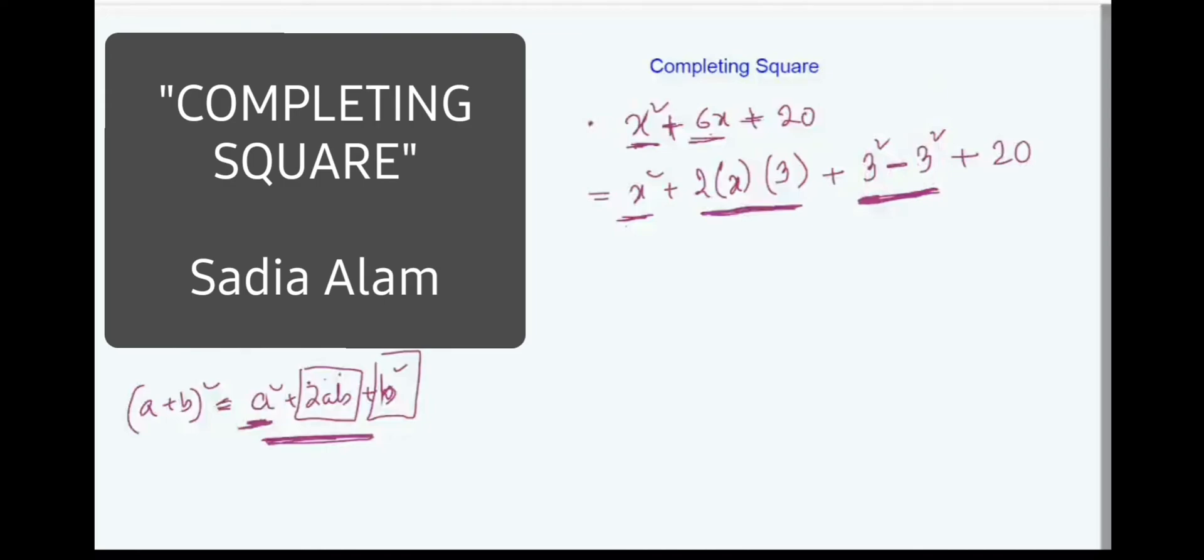So I have arranged this entire thing. Now I will just substitute them into the formula. So the first three terms, remember to take the first three terms only. So a square, 2ab, b square, you can replace this entire thing using a plus b whole square.